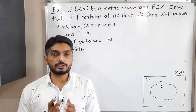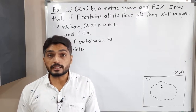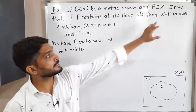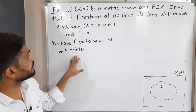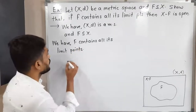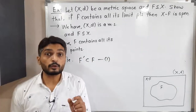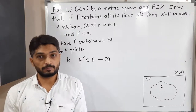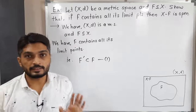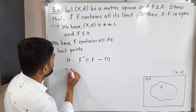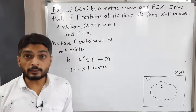Let us discuss this result. We have a metric space X, and F is a subset of X. The given information is that F contains all its limit points, and what we have to prove is that X minus F, that means the complement of F, is open. So F prime, the derived set, meaning the set of all limit points of F, is a subset of F. This is the given information.